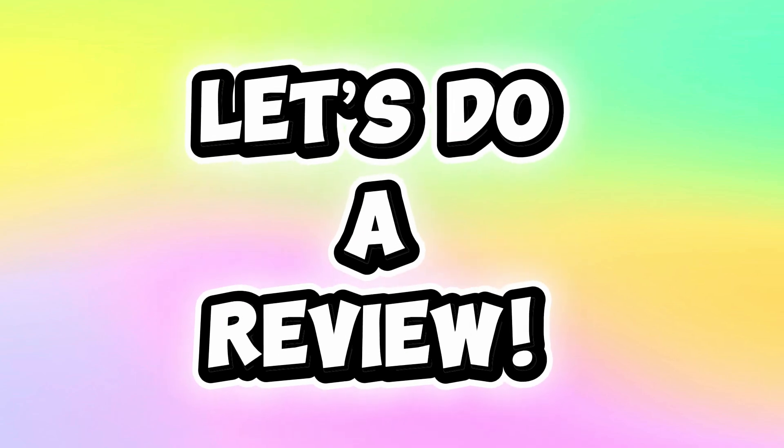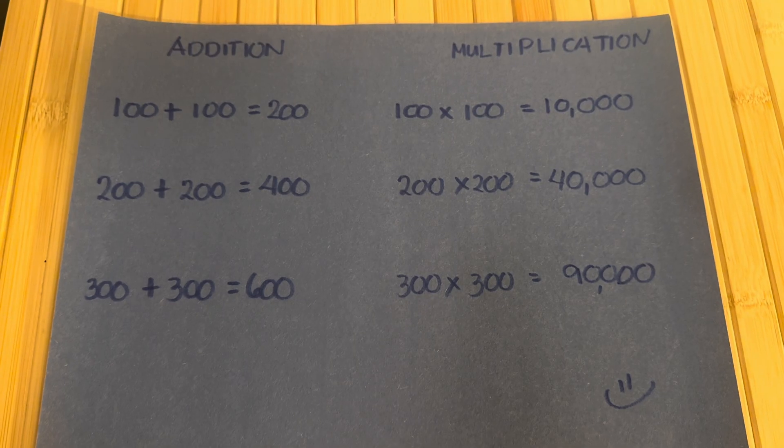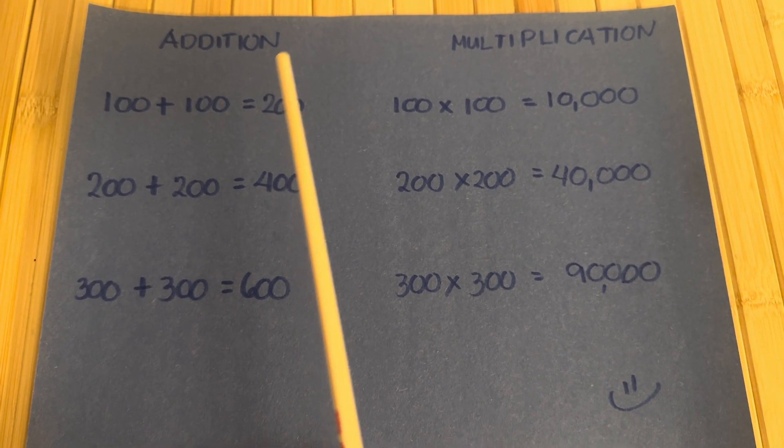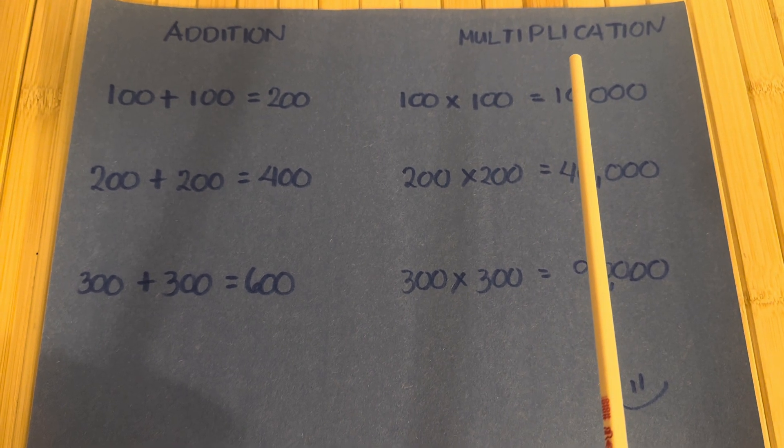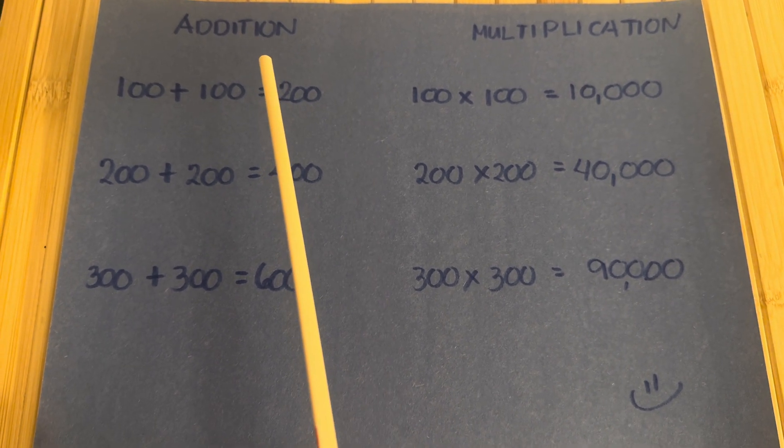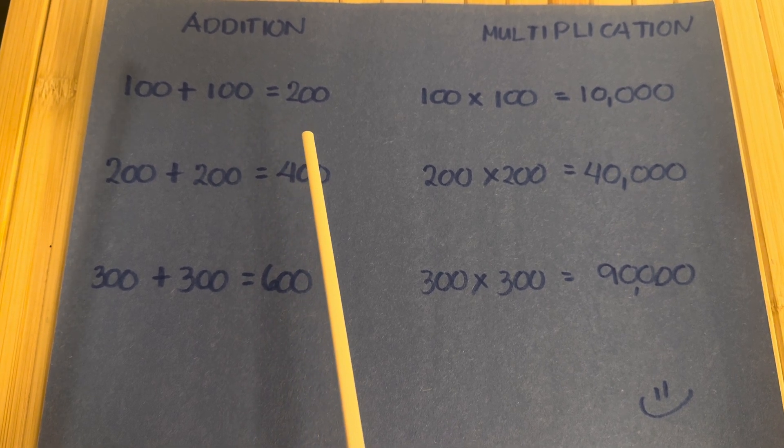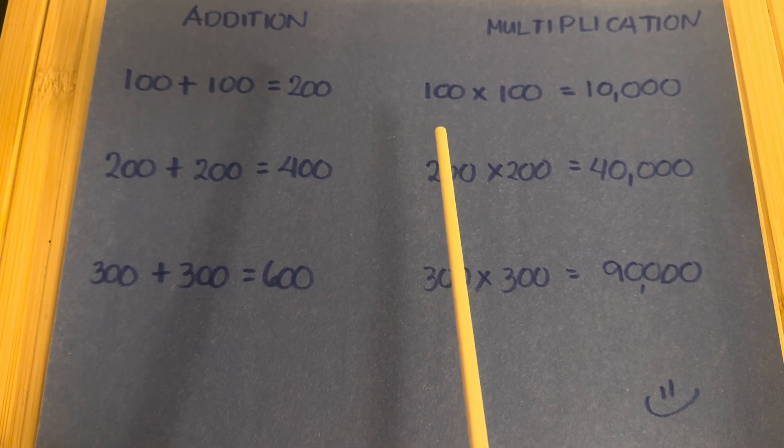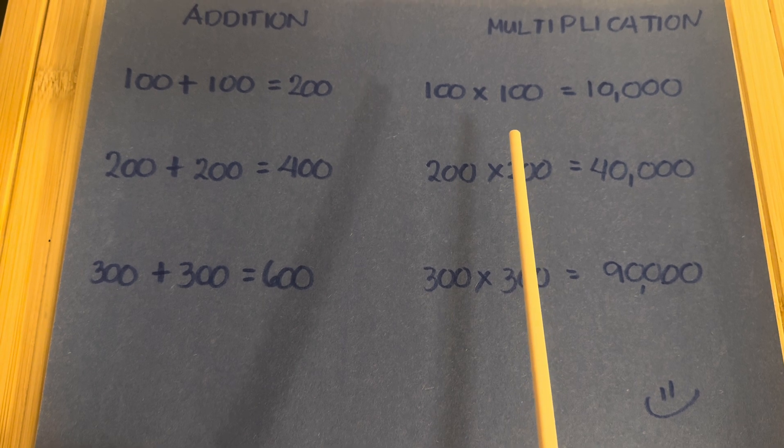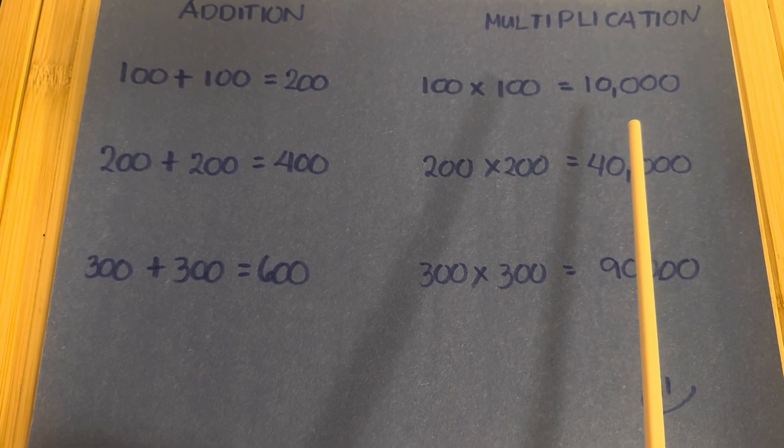Let's do a review. Let's compare addition and multiplication. Let's start with addition first. 100 plus 100 equals 200. In multiplication, 100 times 100 equals 10,000.